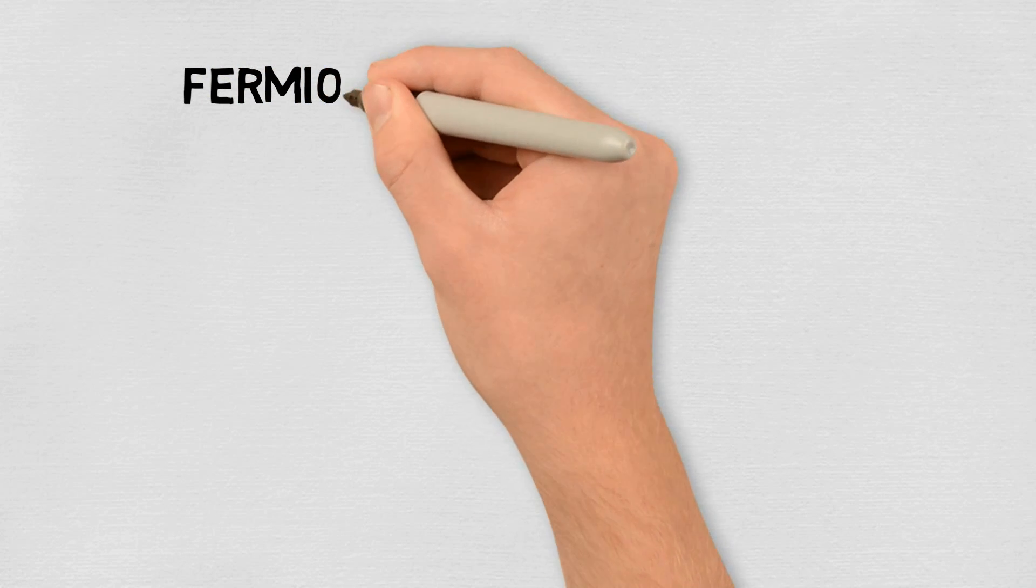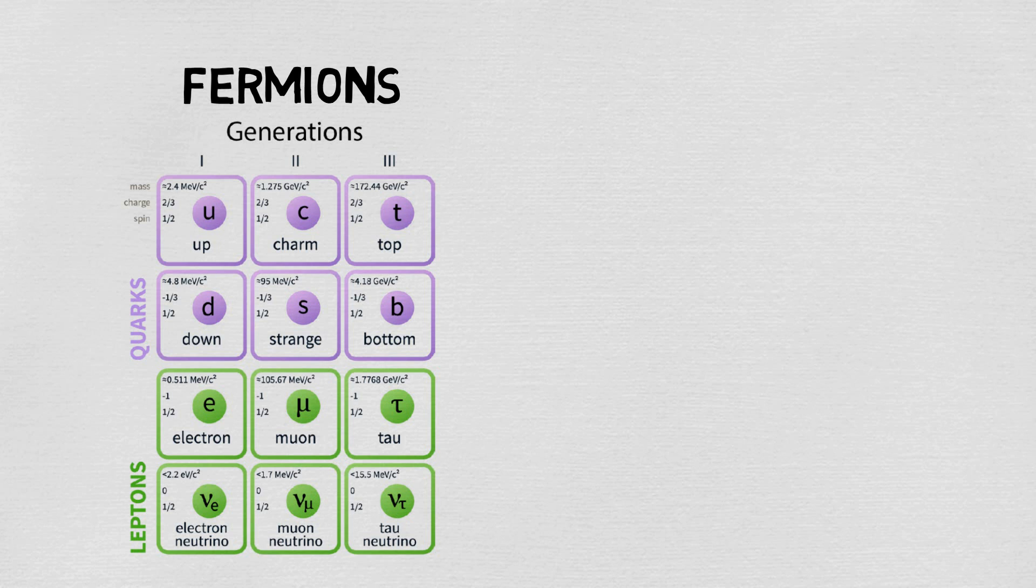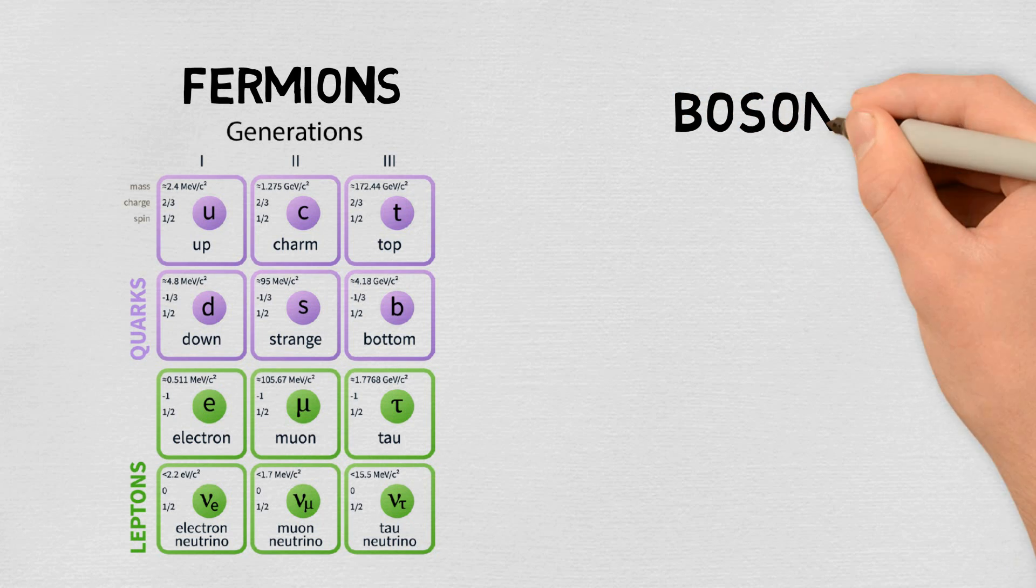There are two types of particles: fermions arranged on the left side and bosons on the right side.